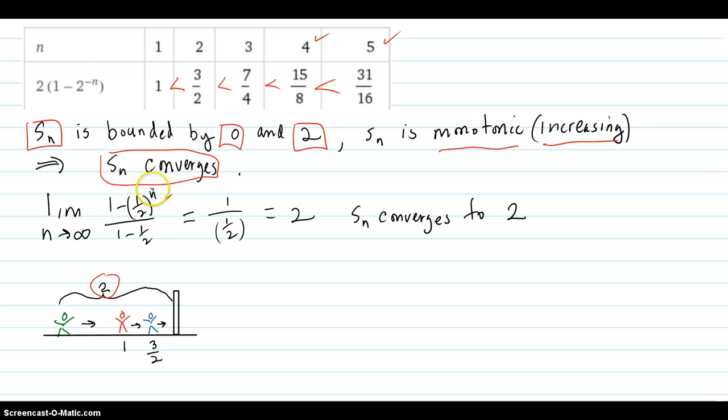As n goes to infinity, this term here goes to zero. So this approaches one over a half, which is two.